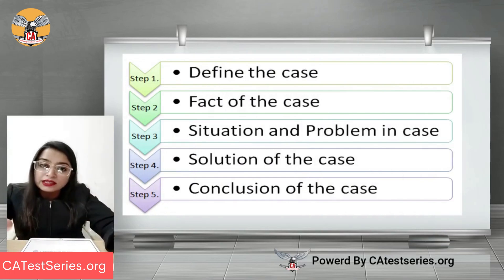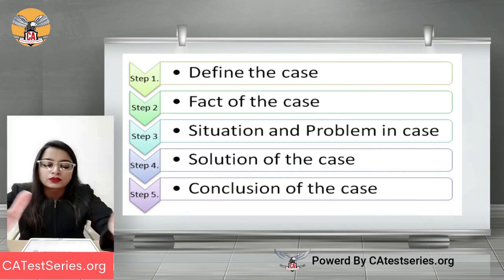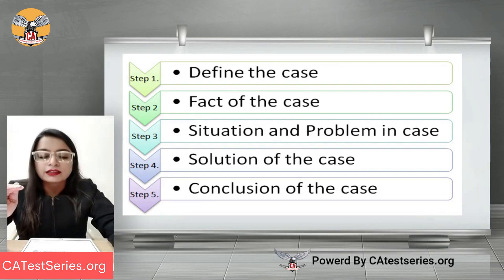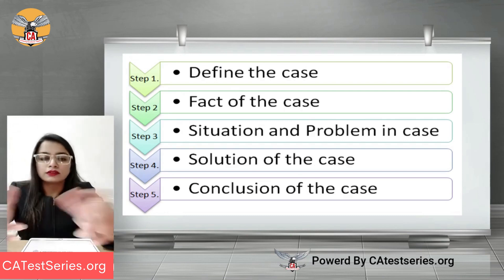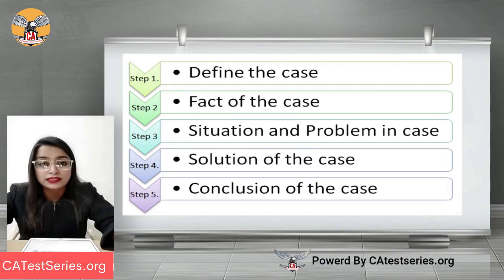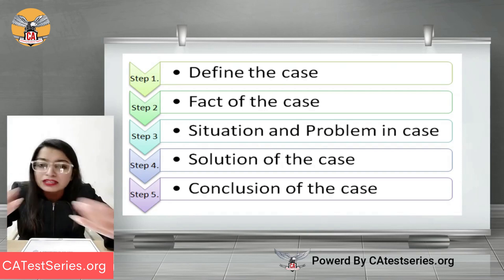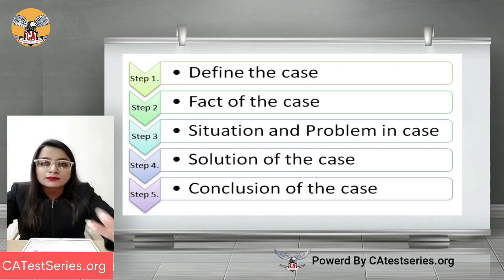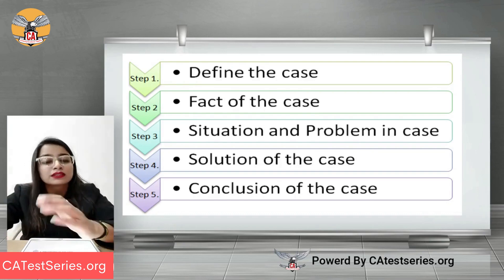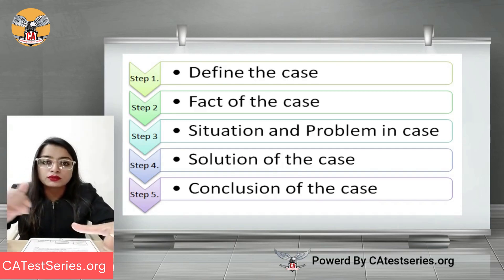For case study based questions, you need to structure your answer in five parts: first, define the case; second, give the facts of the case; third, describe the situation and the problem; fourth, provide the solution; and fifth, give the conclusion with judgments. Your DT questions are bifurcated into these five parts — definition, facts, situation, problem, solution, and conclusion with the judgmental component.